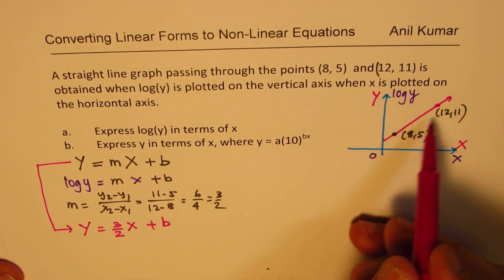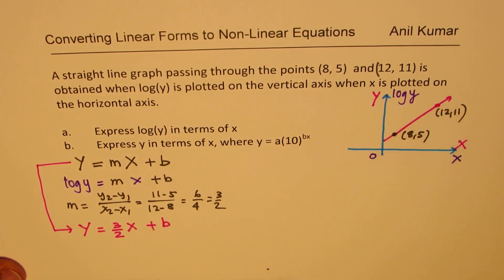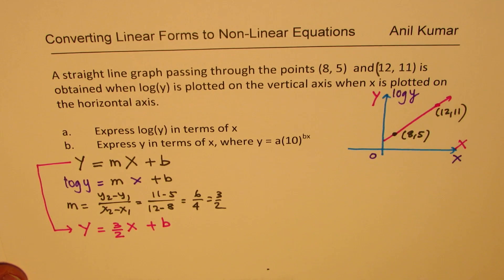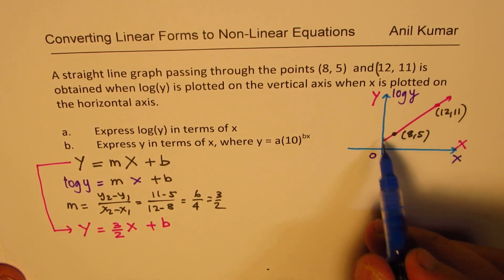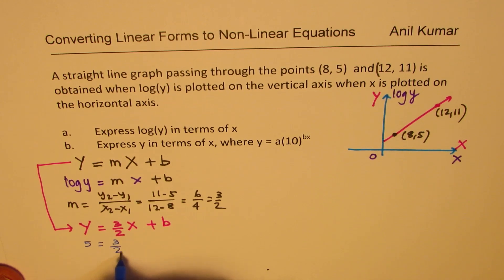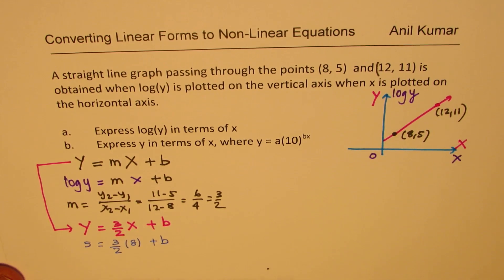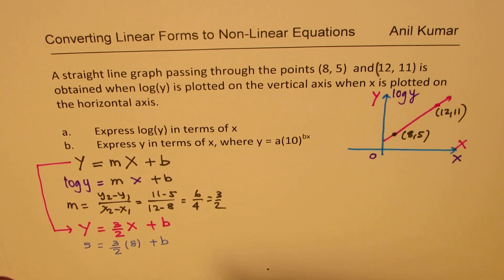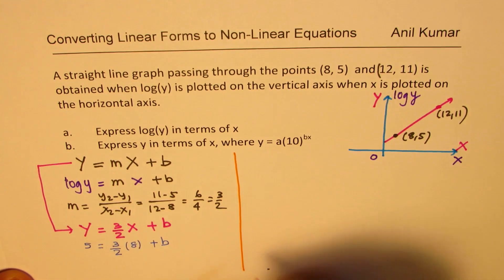Now we are given two points. We can use any one of these points to find the value of b. So let's substitute 8 for x and 5 for y. We get 5 equals 3/2 times 8 plus b. So that should help us to find the value of b.